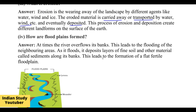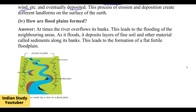How are floodplains formed? When a river overflows from its banks, it leads to the flooding of the neighboring area. As it floods, it deposits a layer of fine soil and other material called sediment along its banks. The fine soil particles, which are very fertile, finally build up to form floodplains.